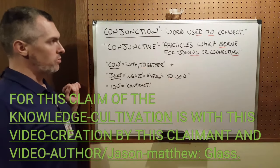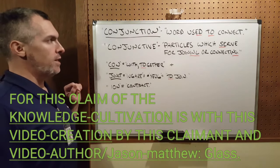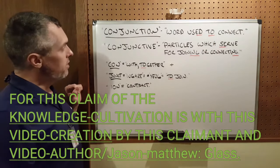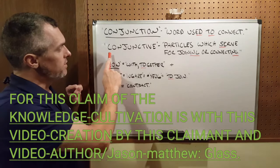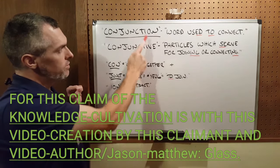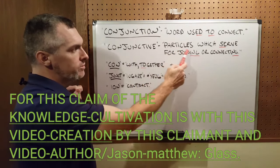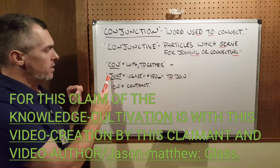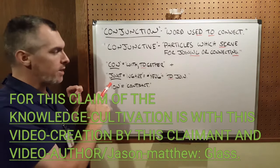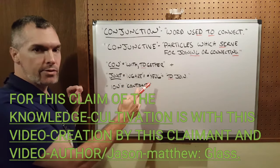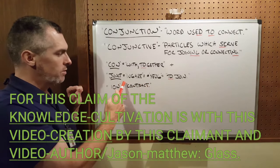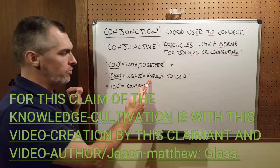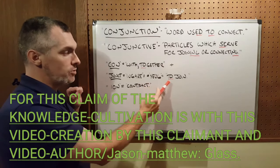To begin with, Google defines conjunction as a word used to connect. Black's Law Dictionary also defines it — they use the word 'conjunctive,' which is essentially the same thing — as particles which serve for joining or connecting. When we parse the word conjunction, the CON means 'with together,' and then the 'junct' comes from IUGARE, back to the Proto-Indo-European root YEUG, which means 'to join.'